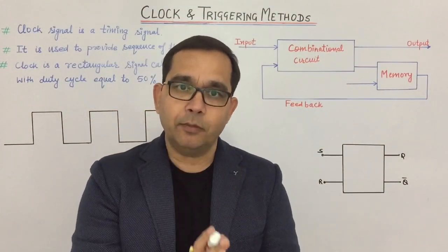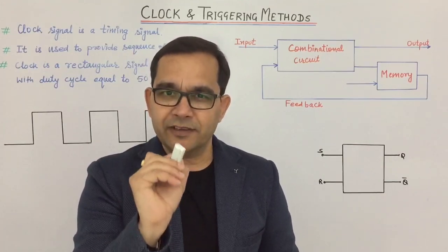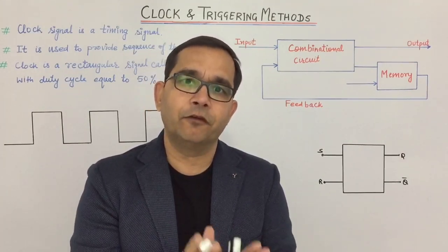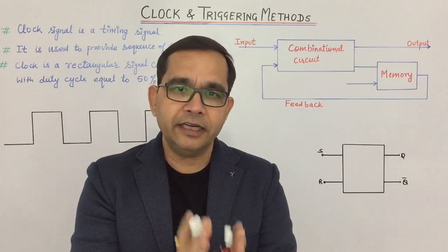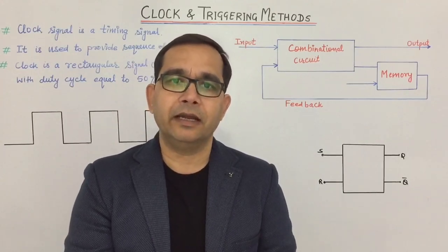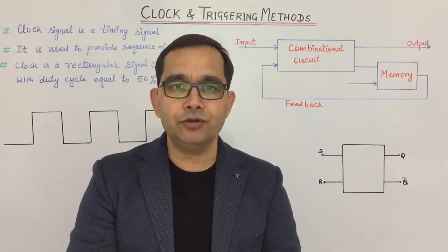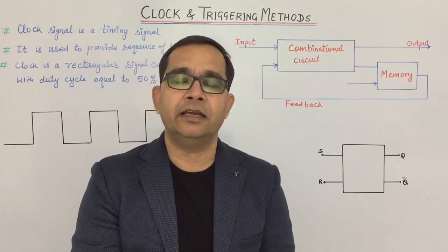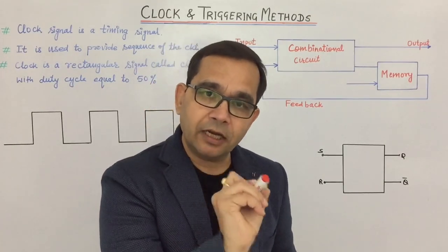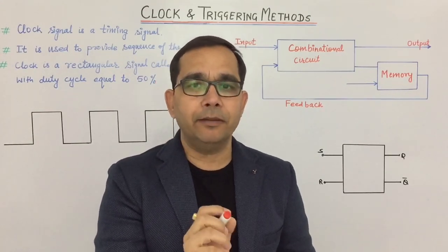In previous lectures we studied introduction to sequential circuits and latches. In coming lectures we will study different types of flip-flops: SR flip-flop, JK flip-flop, D-type flip-flop, T-type flip-flop, master-slave JK flip-flop. We will cover different truth tables and excitation tables, and how these are used for designing counters and shift registers. This lecture covers clock signal and different triggering methods, so watch it from start to finish.